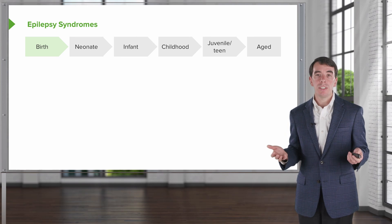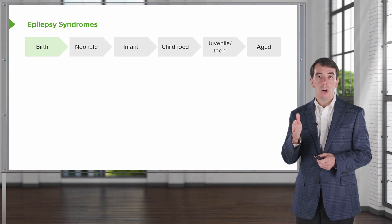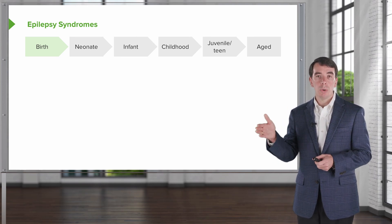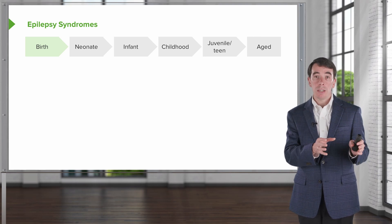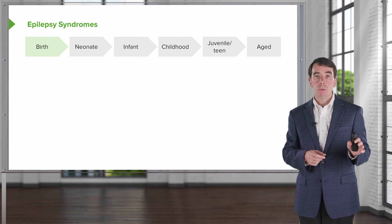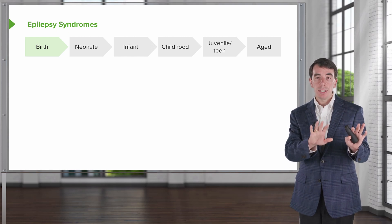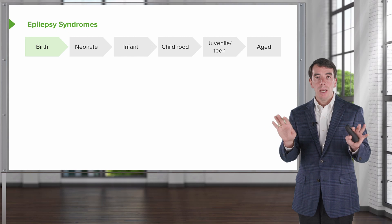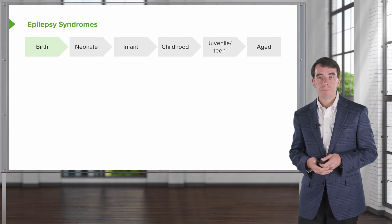So let's look at some of these epilepsies. I don't need you to understand all the individual epileptic diagnoses, but I want you to see how when we are evaluating a patient who may have epilepsy, we're putting the seizure type together with the age of onset and their neurologic examination to determine the type of epilepsy diagnosis that is most likely.